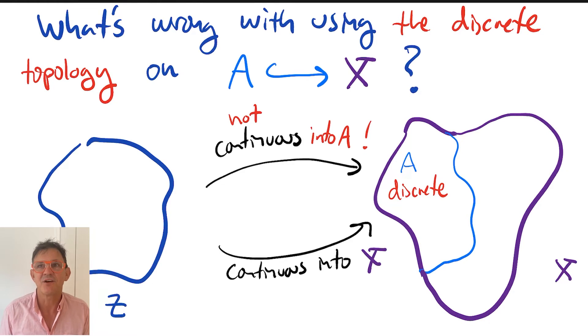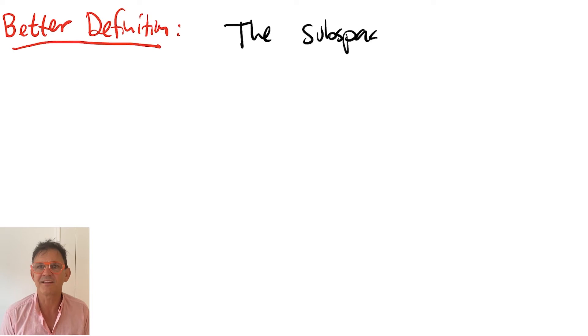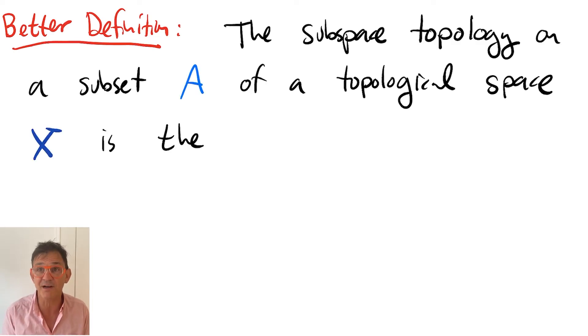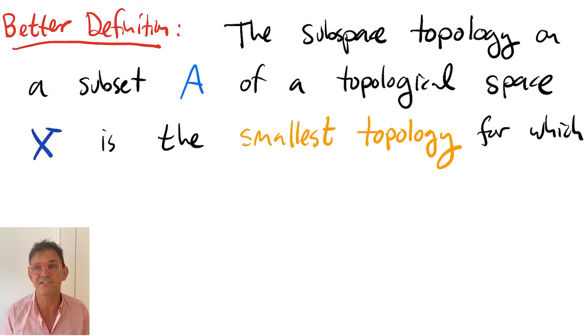This is pathological. We don't want the continuity of a map to depend on enlarging or shrinking harmlessly the codomain. We can eliminate this pathology if we define the subspace topology to be the smallest topology for which the inclusion is continuous.